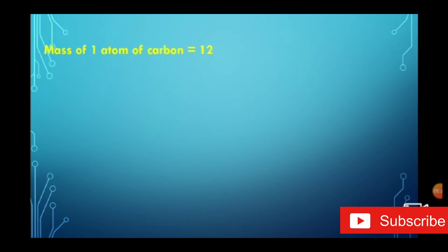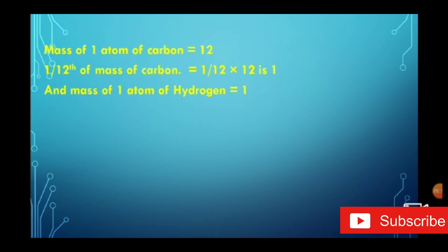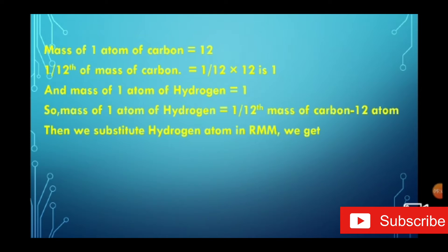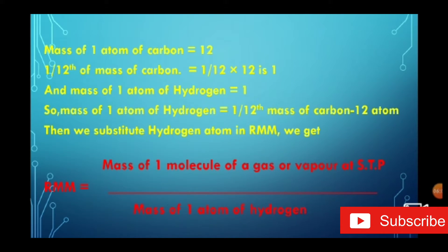The mass of one atom of carbon is 12, and 1/12th of that mass gives 1. The mass of one atom of hydrogen is also 1. So the mass of one atom of hydrogen is equal to 1/12th the mass of a carbon-12 atom. Therefore, we substitute the hydrogen atom in the relative molecular mass formula, and we get: relative molecular mass equals the mass of one molecule of gas or vapour at standard temperature and pressure divided by the mass of one atom of hydrogen, because both are the same.